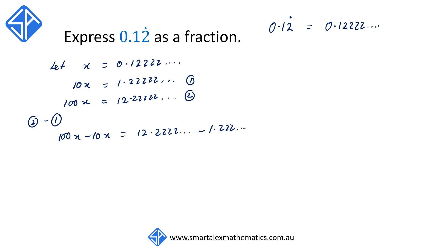If we set this up as a column subtraction, what we see is that since all the digits after the decimal point line up, they're going to be able to cancel out so that we're left with the answer of 11.